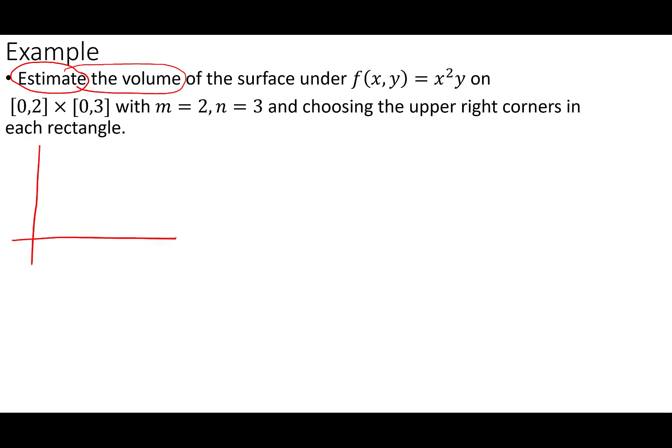So I'm going to go ahead and draw our rectangle. So x is going from 0 to 2, and y is going from 0 to 3. So that means our box is this thing right here. Now we're going to subdivide our x-axis into two equal subsegments. So that would be right here at one. And then we're subdividing our y-axis into three. We have one, two here. So that's going to give us this nice little grid.